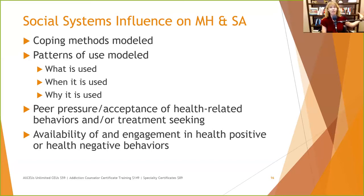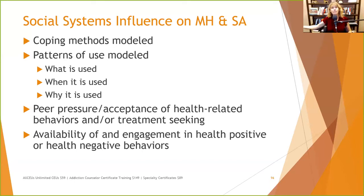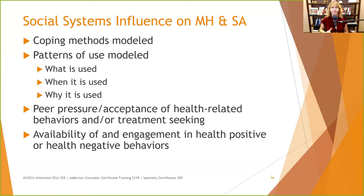In the 60s, when everybody was taking all kinds of drugs, people didn't see a problem with it. In the 80s, doing lines of cocaine was socially sanctioned. Now it seems a larger proportion of the population is thinking about health-related behaviors — exercising, eating well, avoiding gluten. We want to look at how social systems influence whether people take care of themselves and get treatment when needed, and the availability and engagement in health-positive or health-negative behaviors.